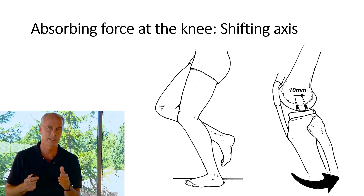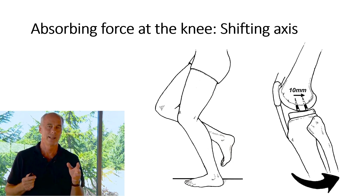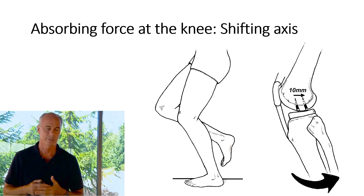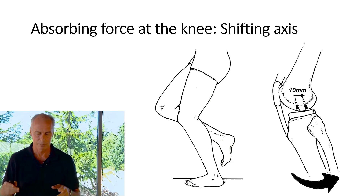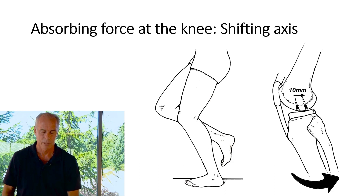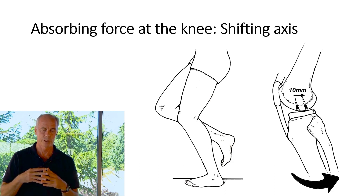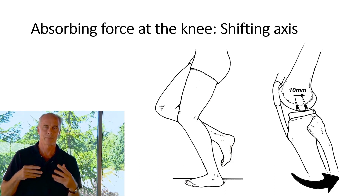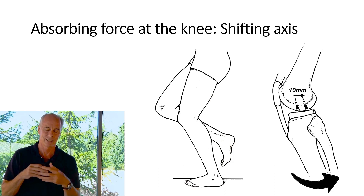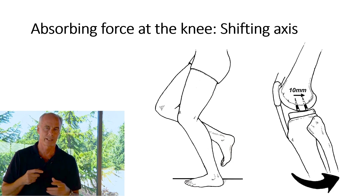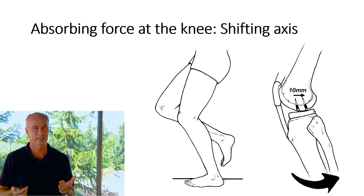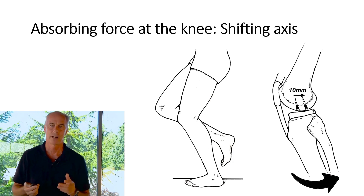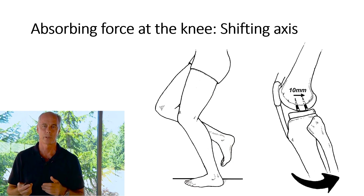Shortly after reaching peak knee flexion, the axis jumps back. An ultrasonography study of athletes going upstairs showed that just before reaching peak force, the quadriceps isometrically tenses and the fascia stores and absorbs the energy. That 10-millimeter shift is an effective way to lessen the metabolic cost of locomotion.